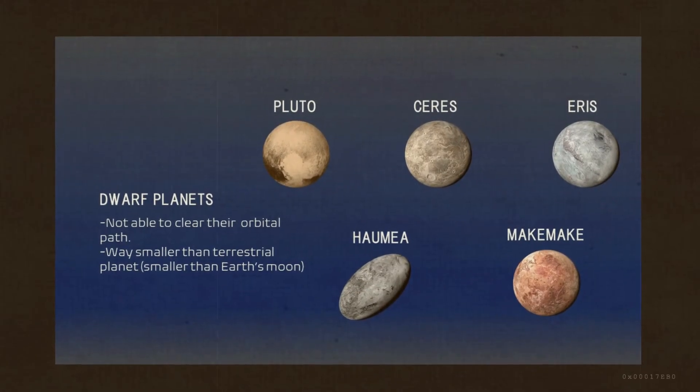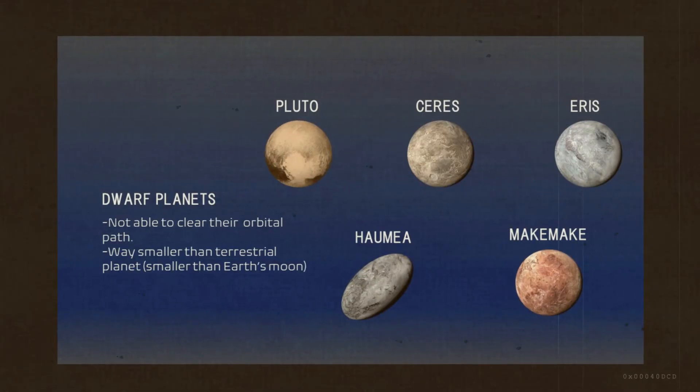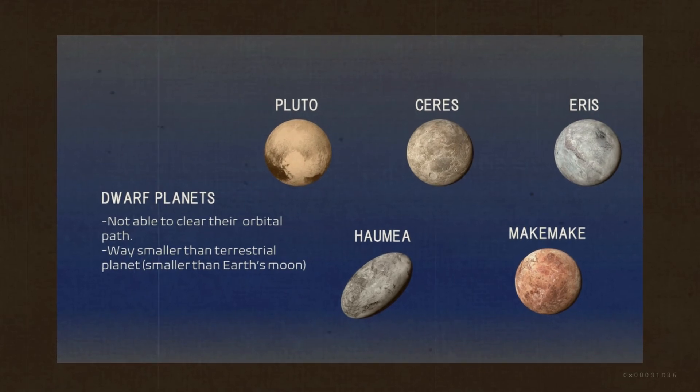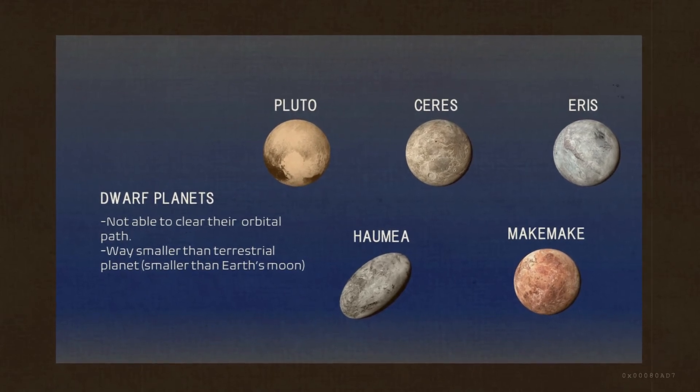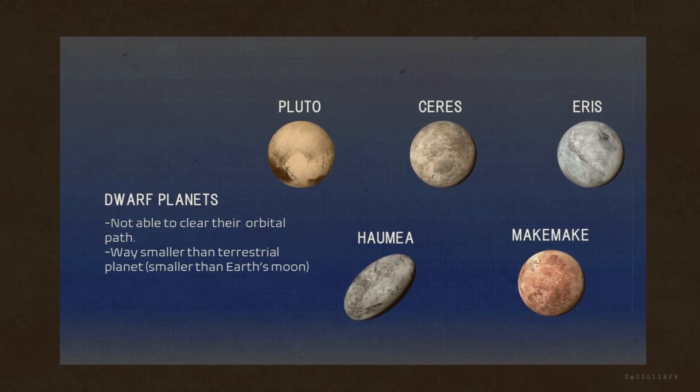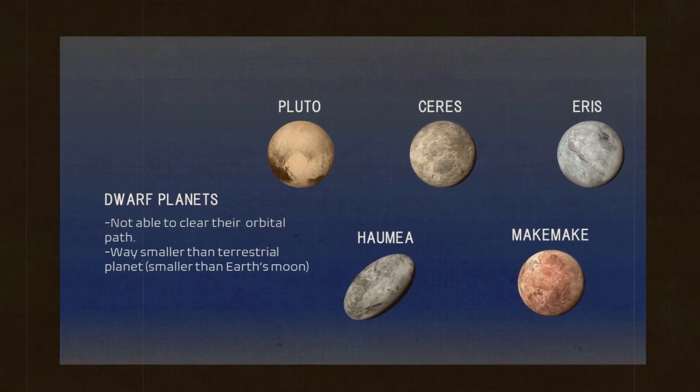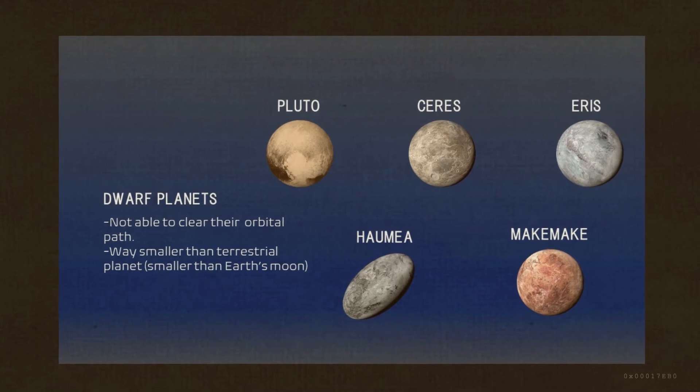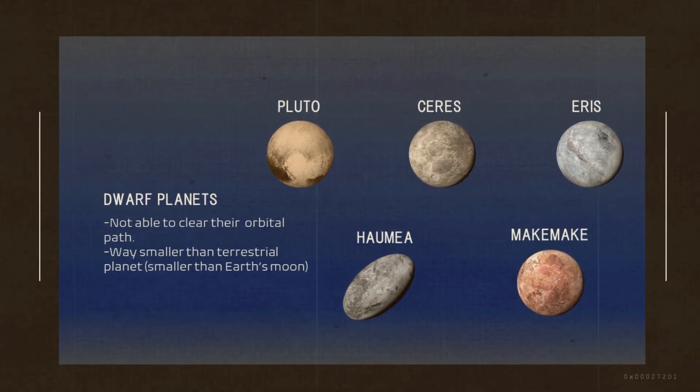Dwarf planets are celestial bodies resembling much smaller planets, but they are lacking certain criteria to be considered a planet. There are at least 5 known dwarf planets in our solar system, namely, Pluto, Ceres, Eris, Haumea, and Makemake.